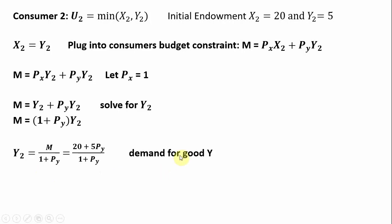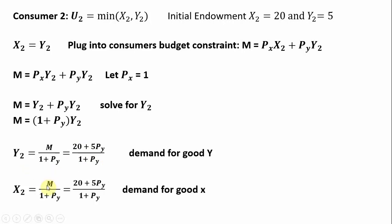Now we have the demand for good y: income over (1 plus the price of good y). The consumer's income is the initial endowment multiplied by the respective prices — so 20 times 1 plus 5 times the price of good y. And since y equals x for this consumer, the demand for good x is identical.